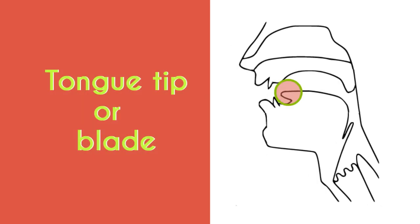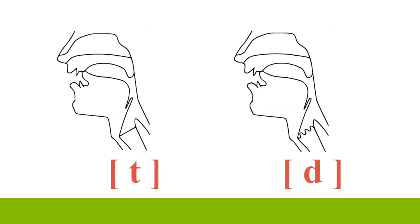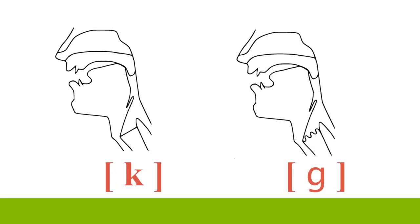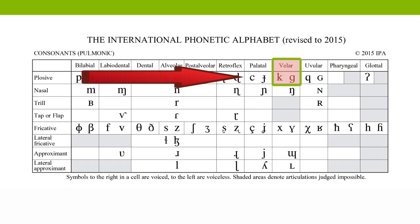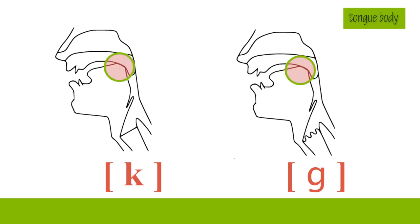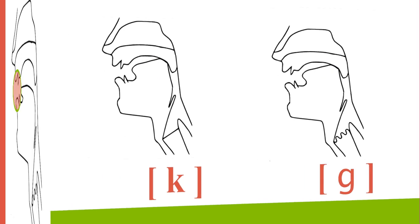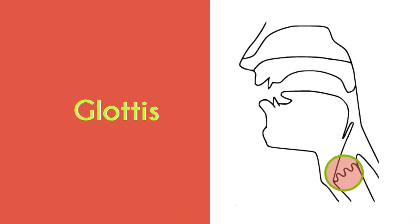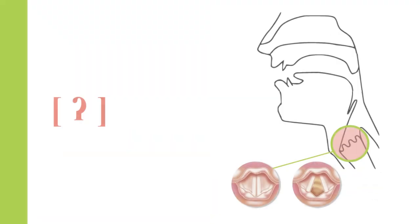The tongue tip or blade are used for producing the plosives 'ta' and 'da.' When articulating these two sounds, you're using the tip or blade of your tongue. The tongue body, on the other hand, is used for producing 'ka' and 'ga,' because that's further back in the mouth. The body — not the tip or blade — engages with the velum, creating the velar sounds 'ka' and 'ga.' For 'pa' and 'ba,' the lips are engaged. There is also a sound called the glottal stop or glottal plosive, for which you use your glottis.